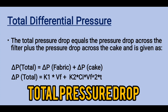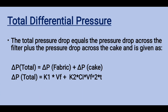Next, we understand the total pressure drop. The total pressure drop equals the pressure drop across the filter plus the pressure drop across the cake, and is given as: delta P_total = K1 × VF + K2 × CI × VF² × T.